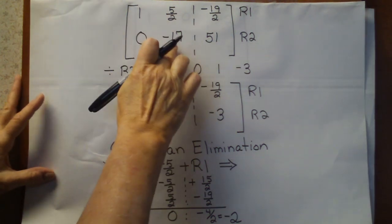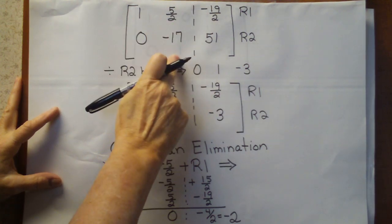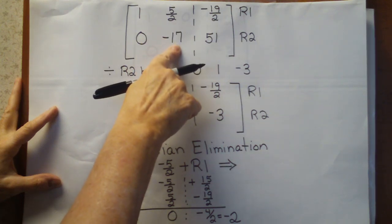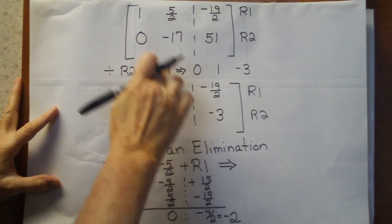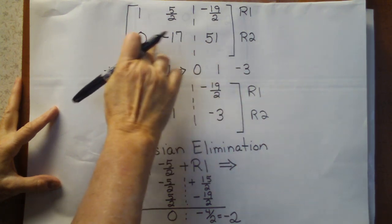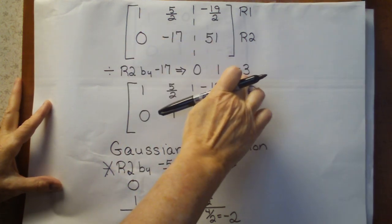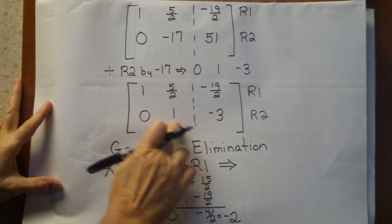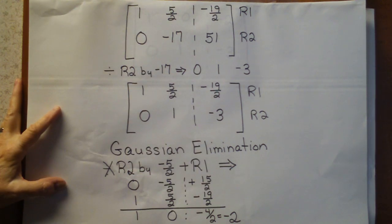Alright, the first thing is now that we've got the first column like we want at 1, 0. The next thing is to work on column 2 and we always start with the 1 where we want the 1. Now, I want the 1 where that minus 17 is. I can get a 1 very easily by just simply dividing the whole row by minus 17. 0 divided by a number is 0. Minus 17 divided by minus 17 will be 1. And 51 divided by minus 17 turns out to be a nice number, minus 3. So this is going to be the new row 2. And you can see I have now 3 numbers that I want, 1, 0 and the 1. So the last one to be changed will be the 5 halves, which I need to turn that into a 0.